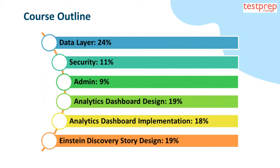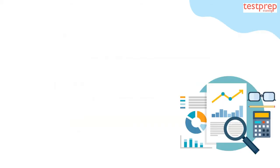The course outline weightages are: first, Data Layer — 24%; second, Security — 11%; third, Admin — 9%; fourth, Analytics Dashboard Design — 19%; fifth, Analytics Dashboard Implementation — 18%; sixth, Einstein Discovery Story Design — 19%.